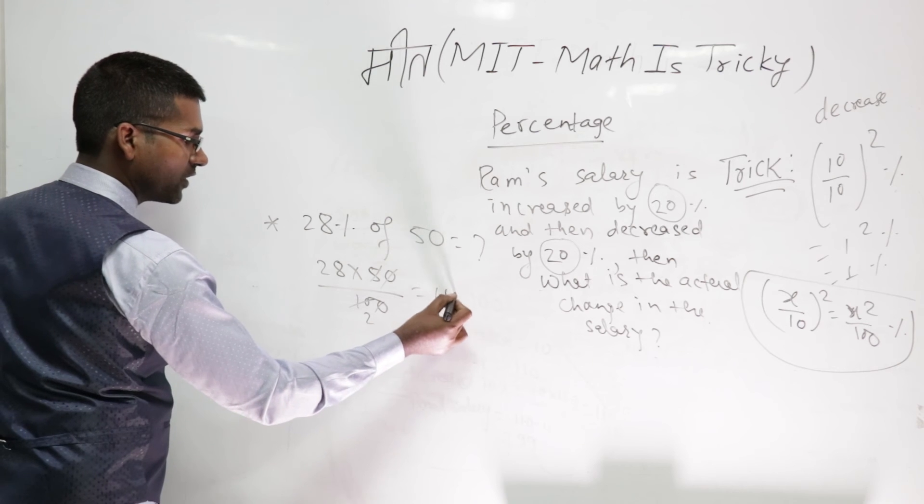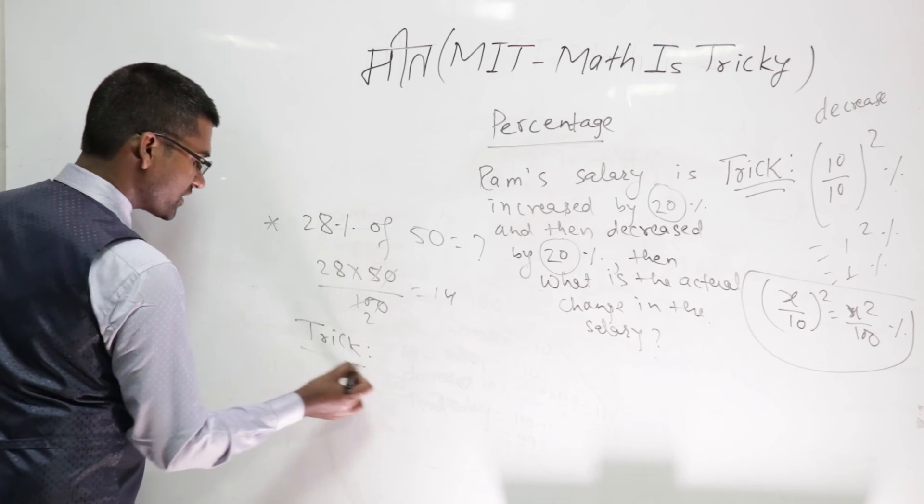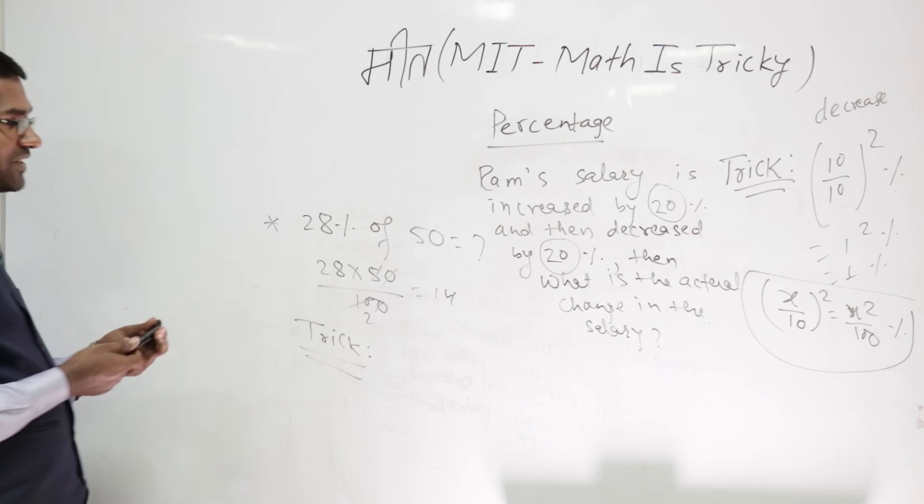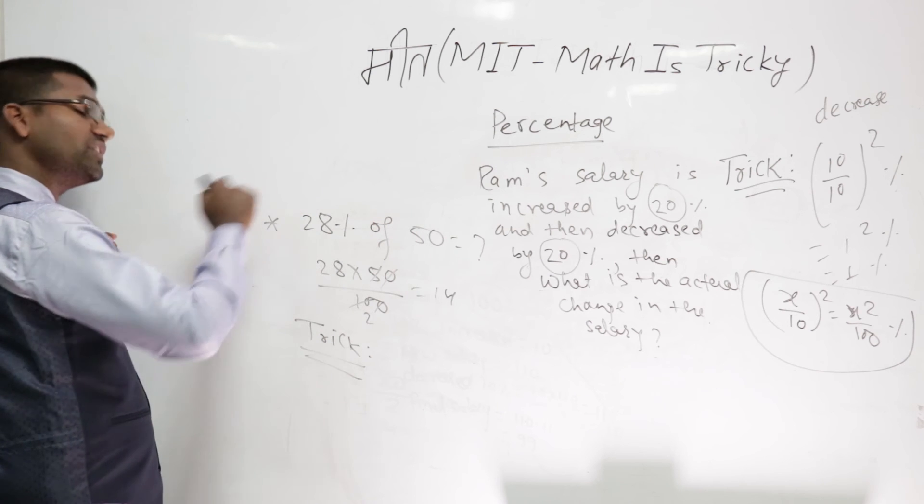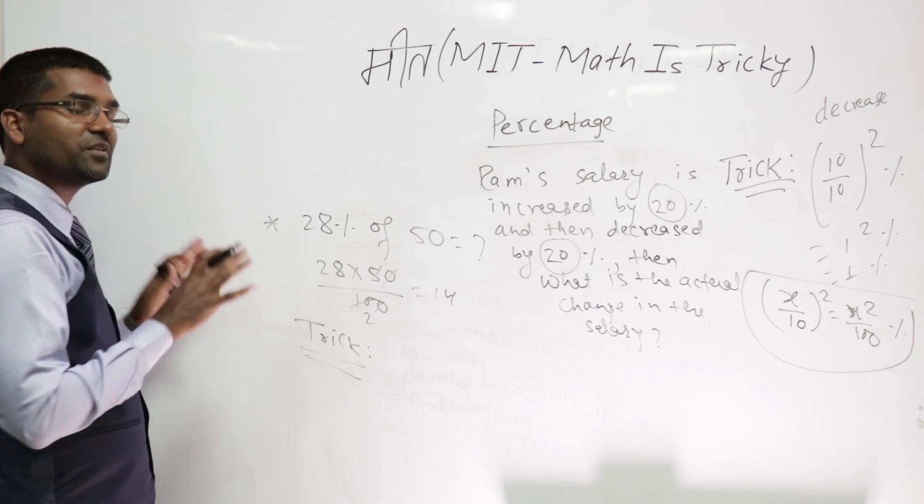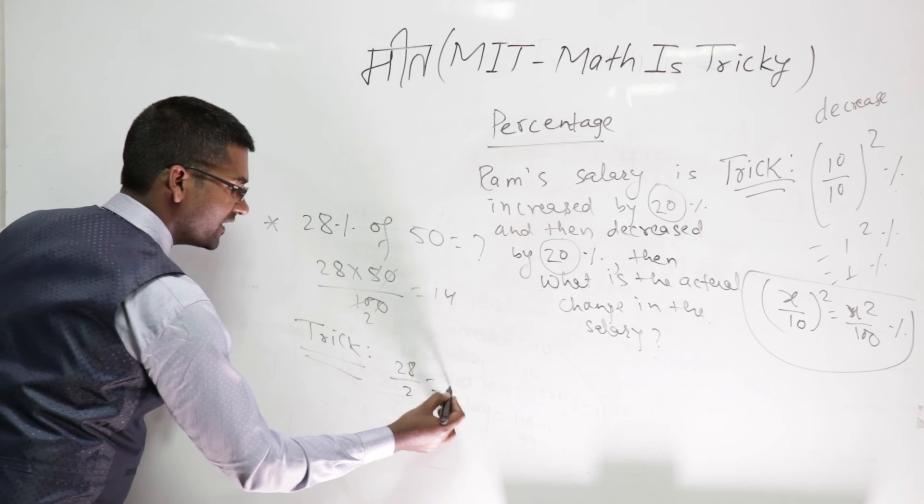The trick is: you don't have to waste your time, please save your time. The trick is simply: 28 percent of 50 means it is 50 percent of 28. And 50 percent is nothing, it is half. So half of 28 will be your answer, which is 14. Same answer you got.